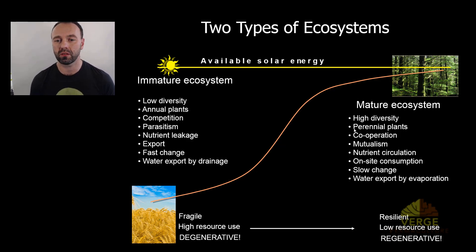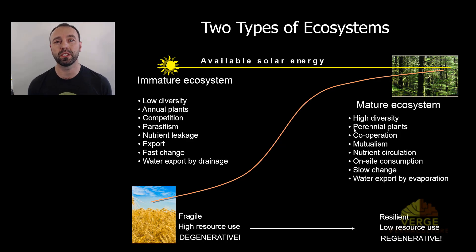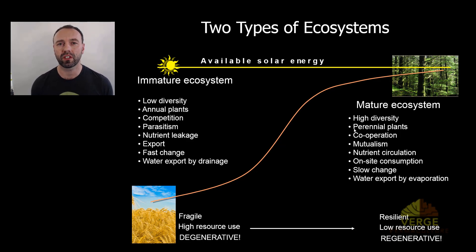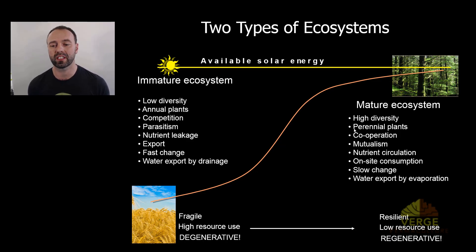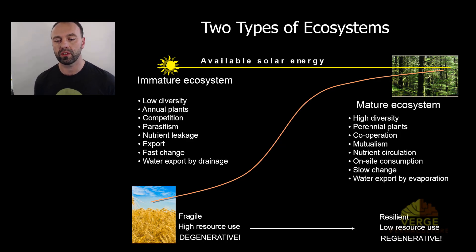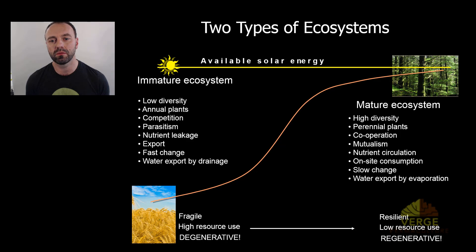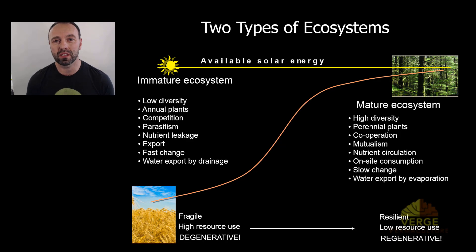In contrast, mature ecosystems are based in high diversity with lots of different plants and animals, perennial plants you plant once and they return, and cooperation and mutualism rather than competition. There's strong nutrient circulation so very little is lost, systems are based on on-site consumption, and water export happens by evaporation rather than drainage. These systems are resilient, have low resource use, and are regenerative. Permaculture aims to mimic mature ecosystems operating on solar energy to create resilience and insurance against the black swans discussed earlier.